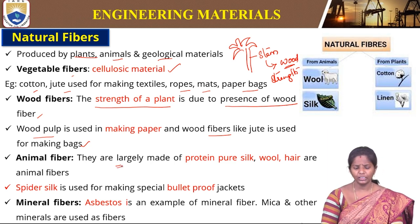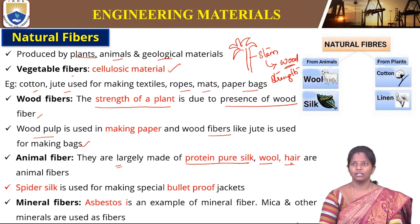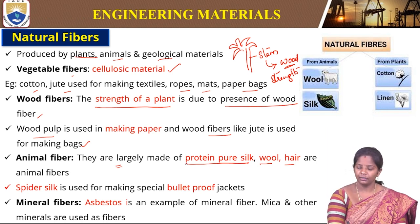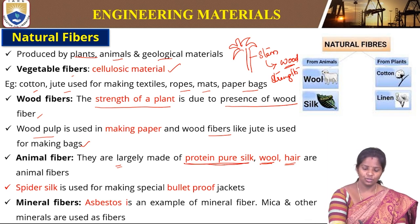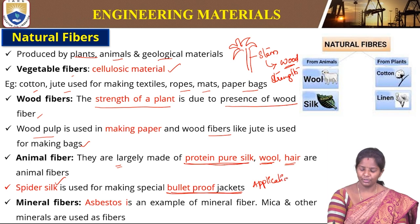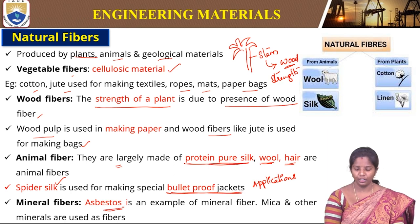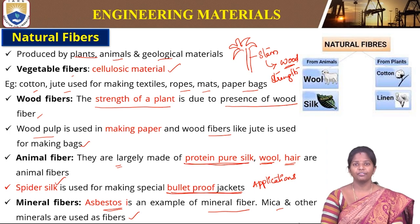Animal fibers are made from protein — pure silk, wool, and hair. Silk is obtained from caterpillars feeding on mulberry, wool comes from sheep, and hair are some examples of animal fibers. Spider silk is used in making bulletproof jackets. Mineral fibers: asbestos is a good example of mineral fiber, and mica and other minerals are also mineral fibers used in different applications.